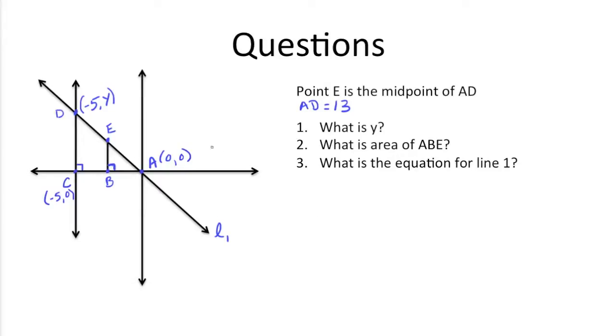So first up, what is Y? Well we know that Y is associated with negative 5 at point D. We know point C here is negative 5, 0 and forms a right angle with this X axis. We also know that over here we have A, which is the origin at 0, 0.